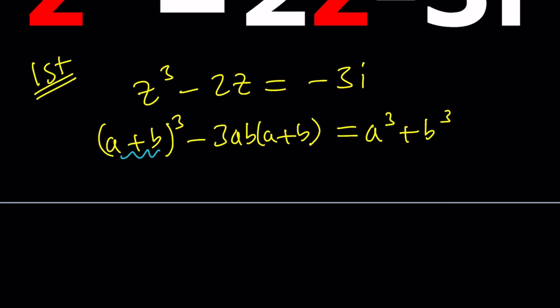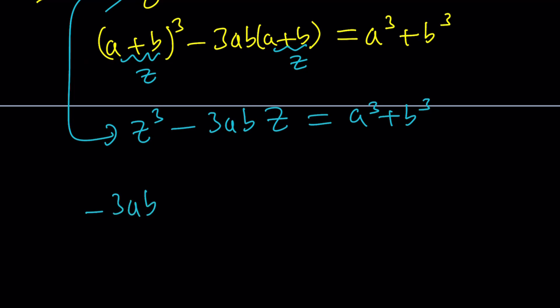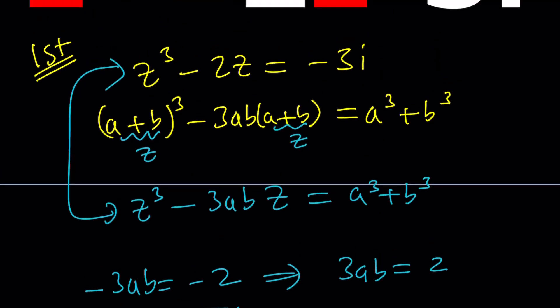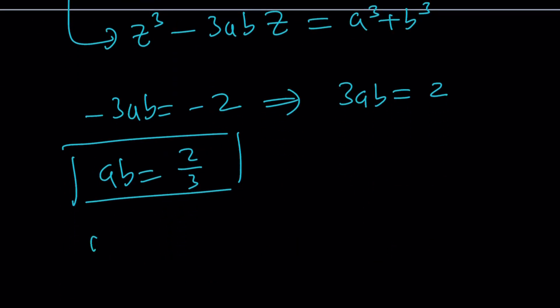So let's go ahead and call this z now. And we got our equation z cubed minus 3abz equals A cubed plus B cubed. And if you compare these two equations, you can realize that the coefficient of z is negative 2 or negative 3ab, which means negative 3ab is the same as negative 2, which implies 3ab equals 2, which implies ab equals 2 thirds. That's one of the equations we're going to use.